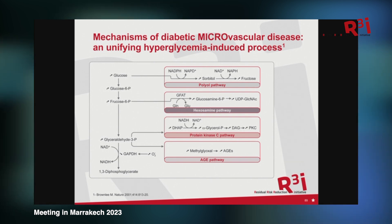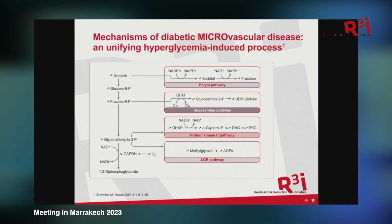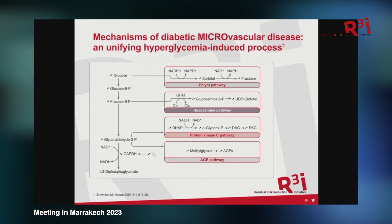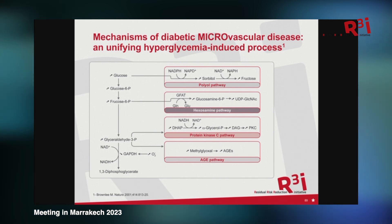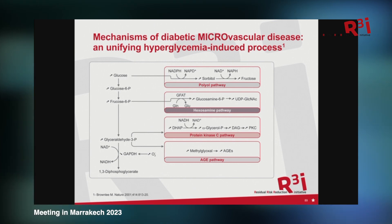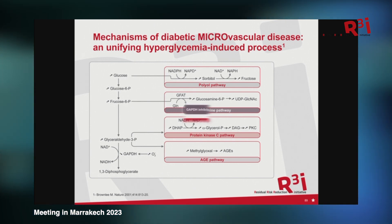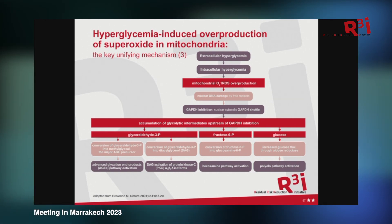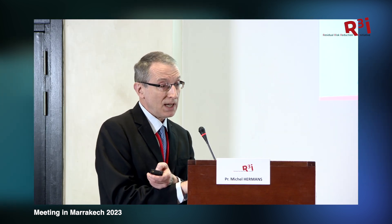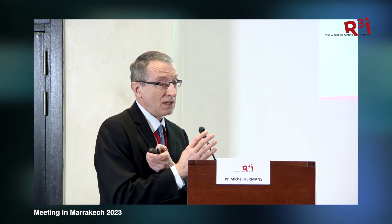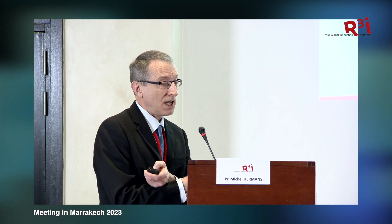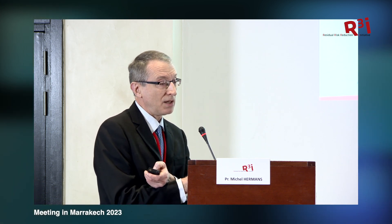The Brownlee hypothesis, for those of you who know it, was published almost 20 years ago by Michael Brownlee in Nature. It describes four different pathways of hyperglycemia-induced complications, and if you look at them, they all start with entry of glucose into cells where the entry is not regulated by a control system such as adipose tissue or muscle. So you will never have diabetic complications in tissues where glucose cannot enter freely.